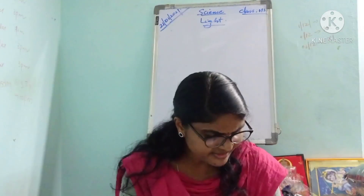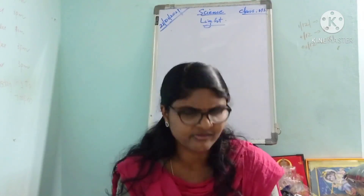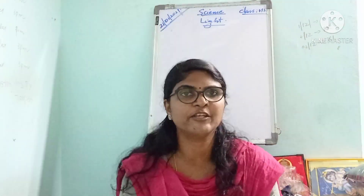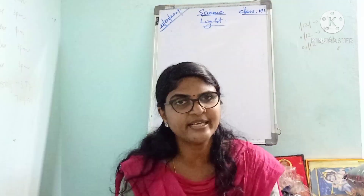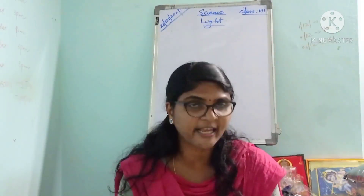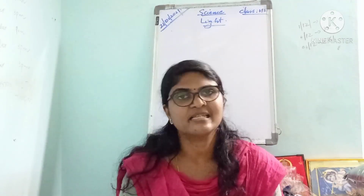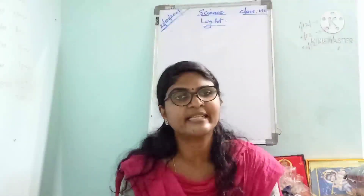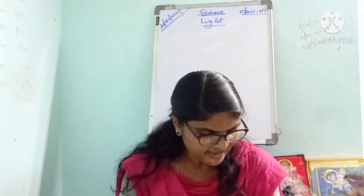Which surface of a concave mirror is silvered? In a concave mirror, the reflecting surface is curved inward — that is the inner surface. The outer surface of a concave mirror is actually silvered, and the reflection takes place from the inner surface.